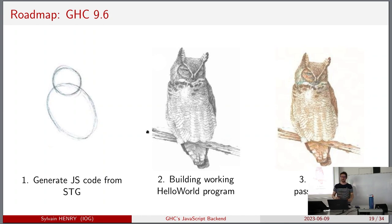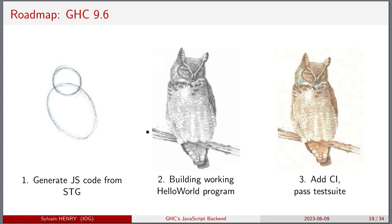When you start a new backend, you generate some code from CMM or STG - that's the first easy part. The second milestone was to build a working Hello World program, which brings everything else: you need the RTS, the linker, boot libraries working. Because it uses IO, you need everything related to IO in GHC to work - it took a long time. The third step was adding CI and passing the test suite. Some tests are still disabled - legitimately broken or real bugs. If you want to contribute, look at things still broken for the JS backend in the test suite and fix them.